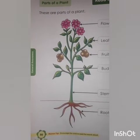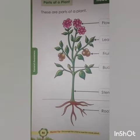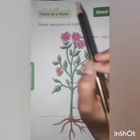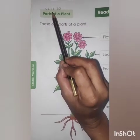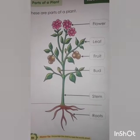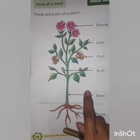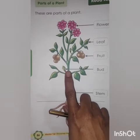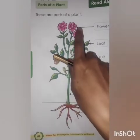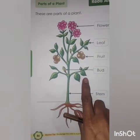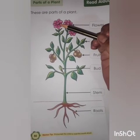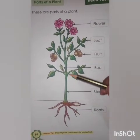Kids, take out your book number 2, page number 86. Mention today's date. Today is 7th of December 2020. Now kids, can you see a plant over here? Yes, this is a plant. So today we will learn about parts of a plant. Just like our body has parts, a plant also has parts.